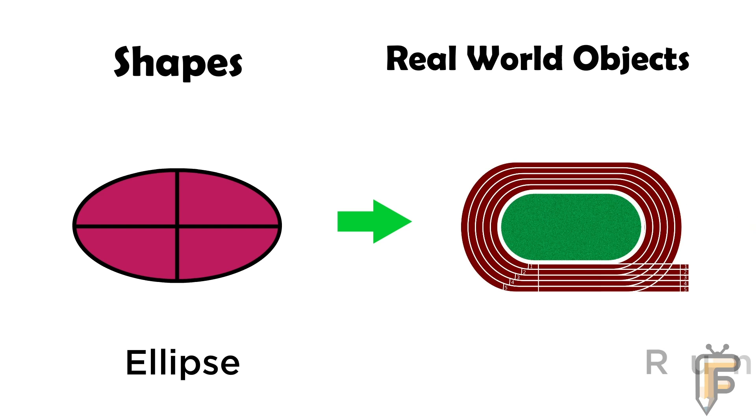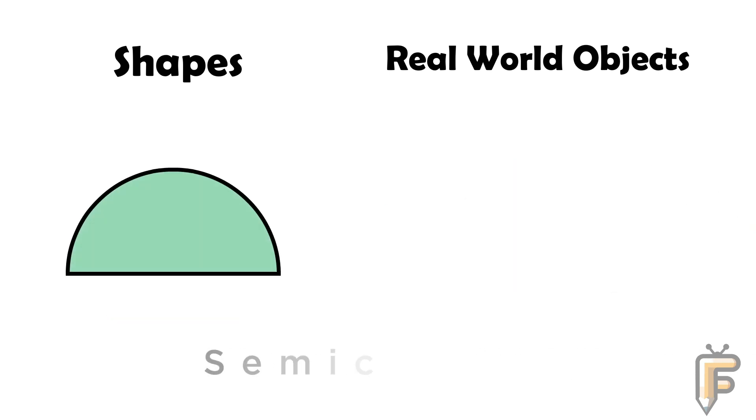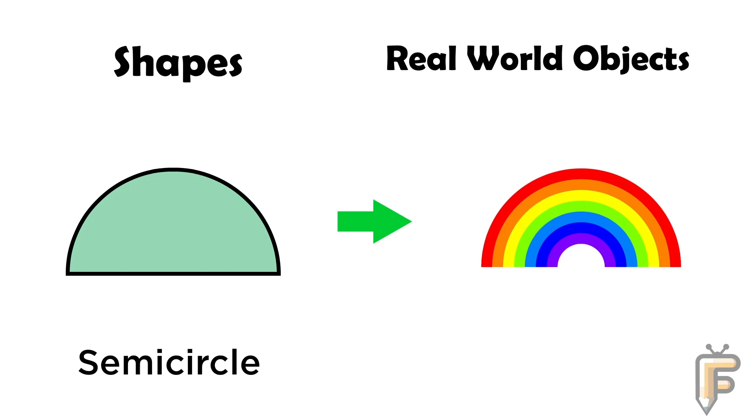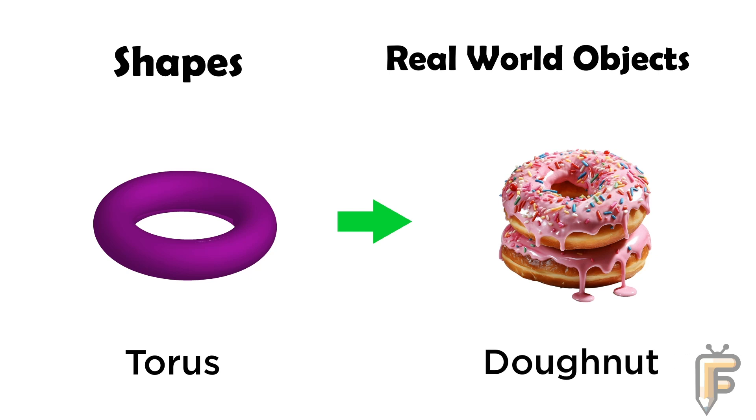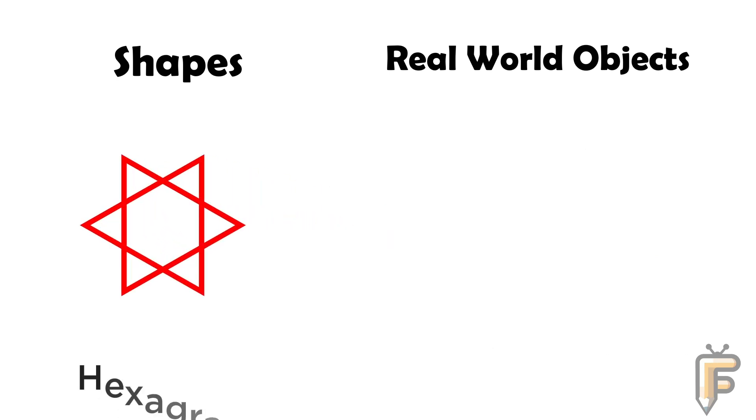Ellipse: running track is ellipse shape. Semicircle: rainbow is semicircle shape. Torus: donut is torus shape.